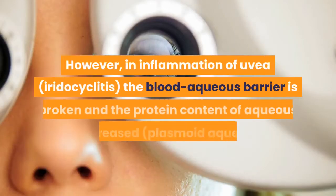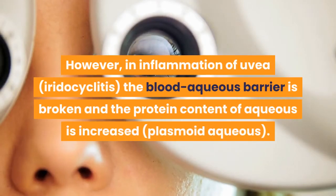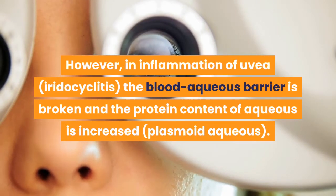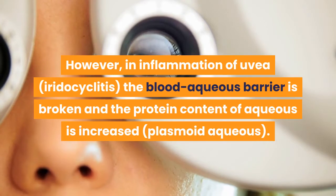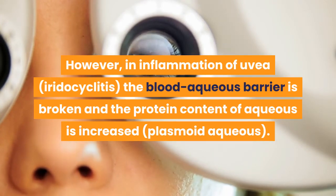However, in inflammation of the uvea — iridocyclitis — the blood-aqueous barrier is broken and the protein content of aqueous is increased, resulting in plasmoid aqueous.